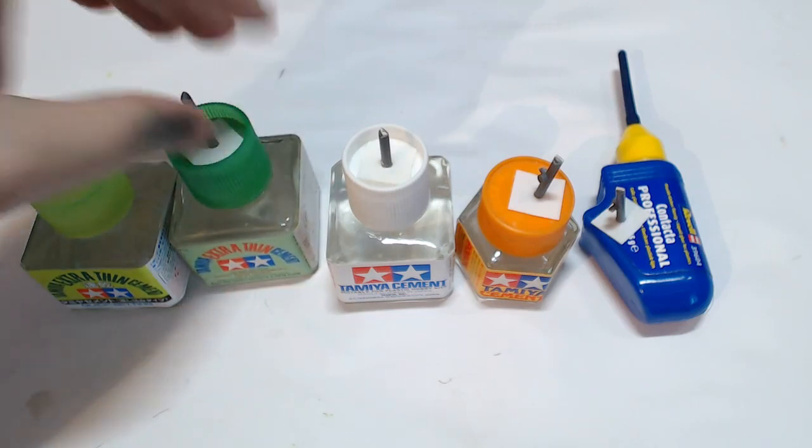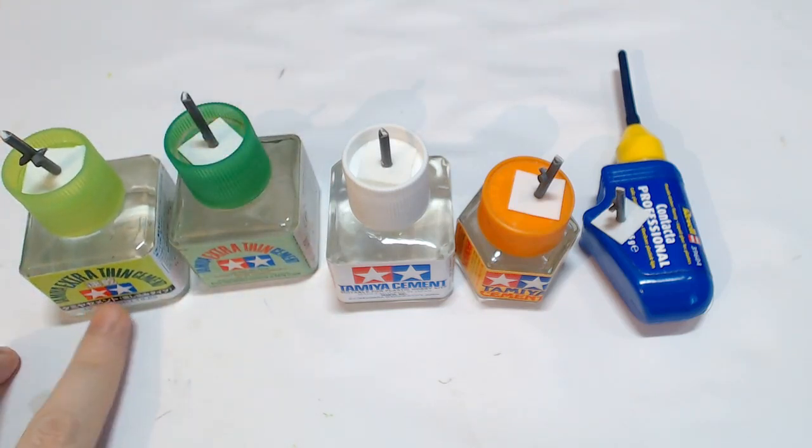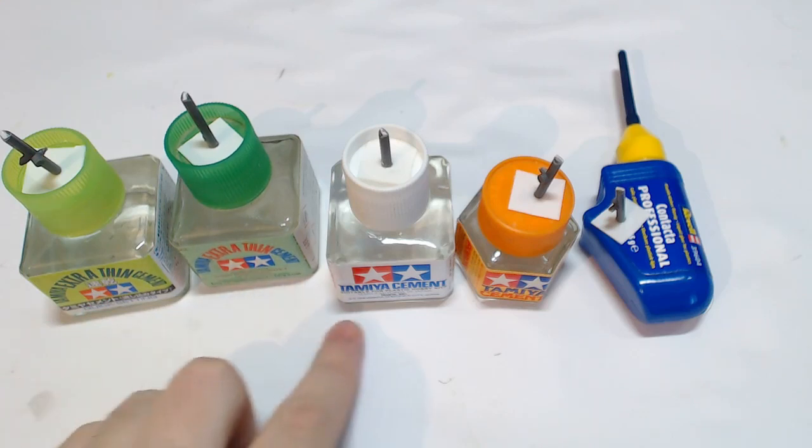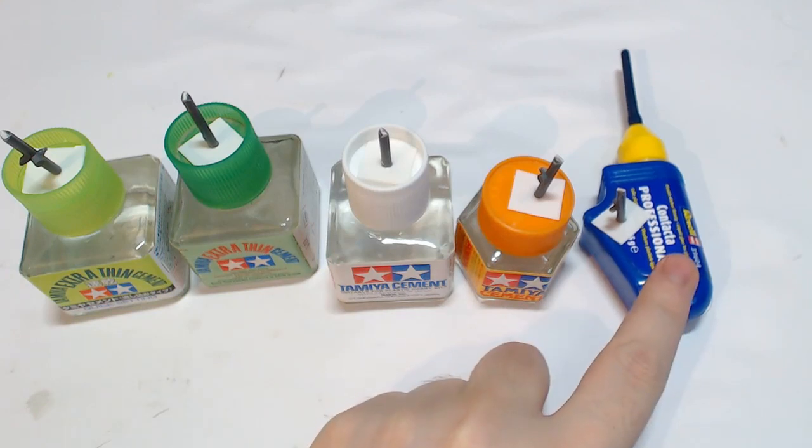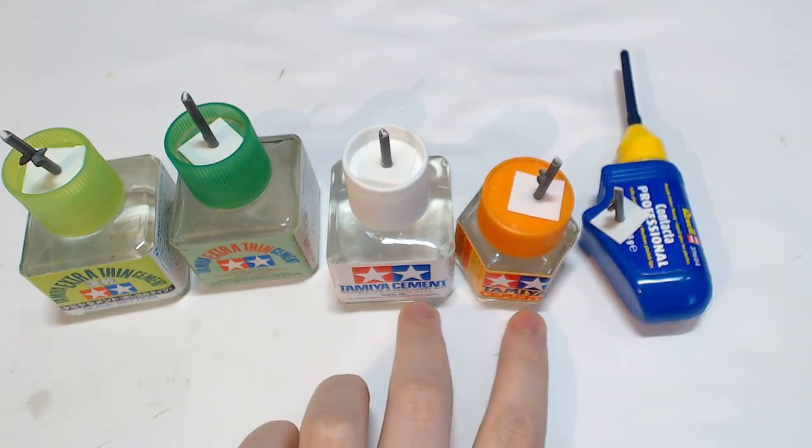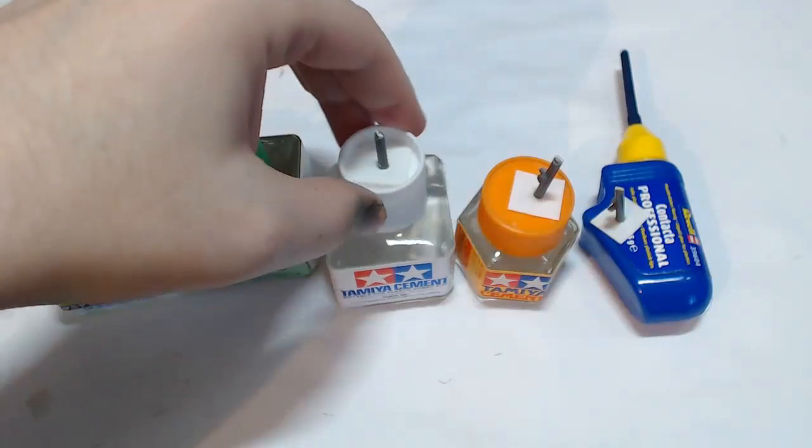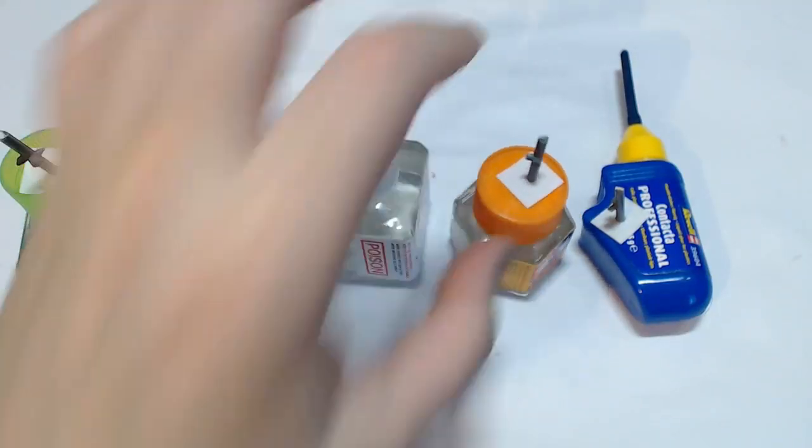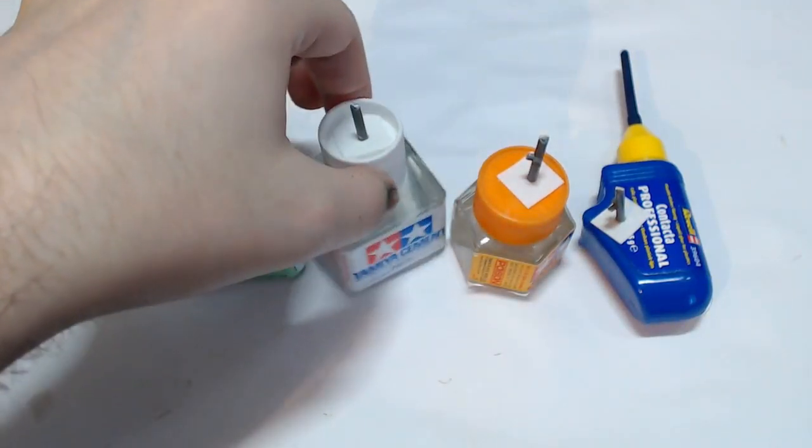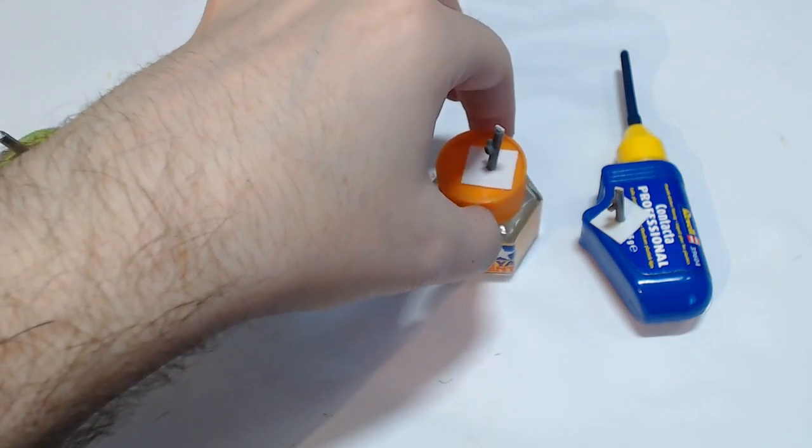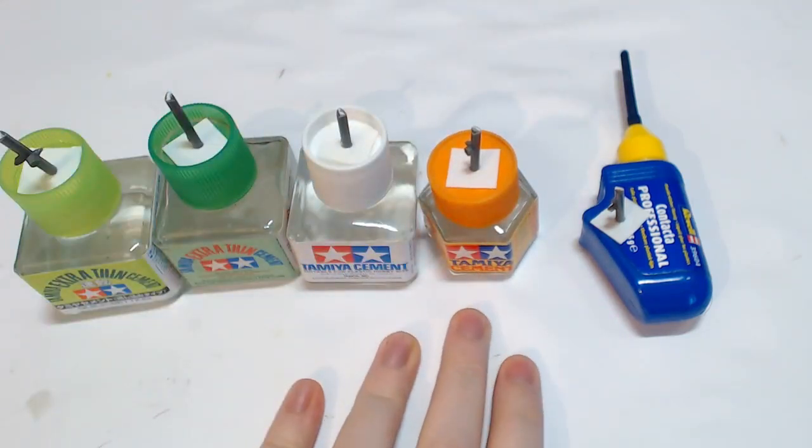So the ones we have here, we have Tamiya cement quick setting, Tamiya cement with a white lid, and Tamiya cement with an orange lid, and then just Revell's Contacta. Now I don't know if these are the same things in different sized jars. They're the only bottles which say poison on them specifically, so I assume they're probably the same thing. But because I had both in different jars, I thought I'd give them a test and see.